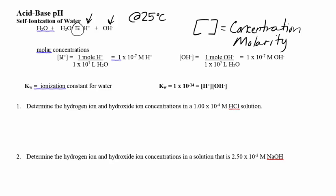The concentration of hydrogen is 1 times 10 to the negative 7th — that means one mole of hydrogen in every 1×10⁷ liters. At 25 degrees, in pure water, the hydroxide concentration is also 1×10⁻⁷. That's why we say pure water is neutral.